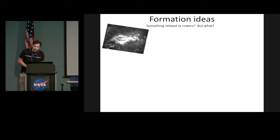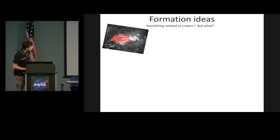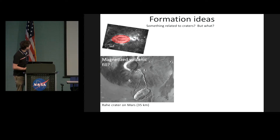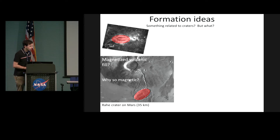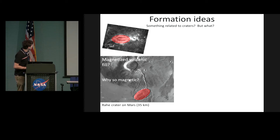What does this mean? How does this thing form? Is it related to craters? If craters are elliptical, that's maybe the first thing that comes to mind. One idea is that this is an elliptical crater filled in with volcanic material that then cooled. Here's an example from Mars: an elliptical crater sitting near a volcano. Could something like that have happened at Reiner Gamma and then been buried? But this doesn't explain why it's so magnetic — most volcanic rocks from the moon are very weakly magnetic.